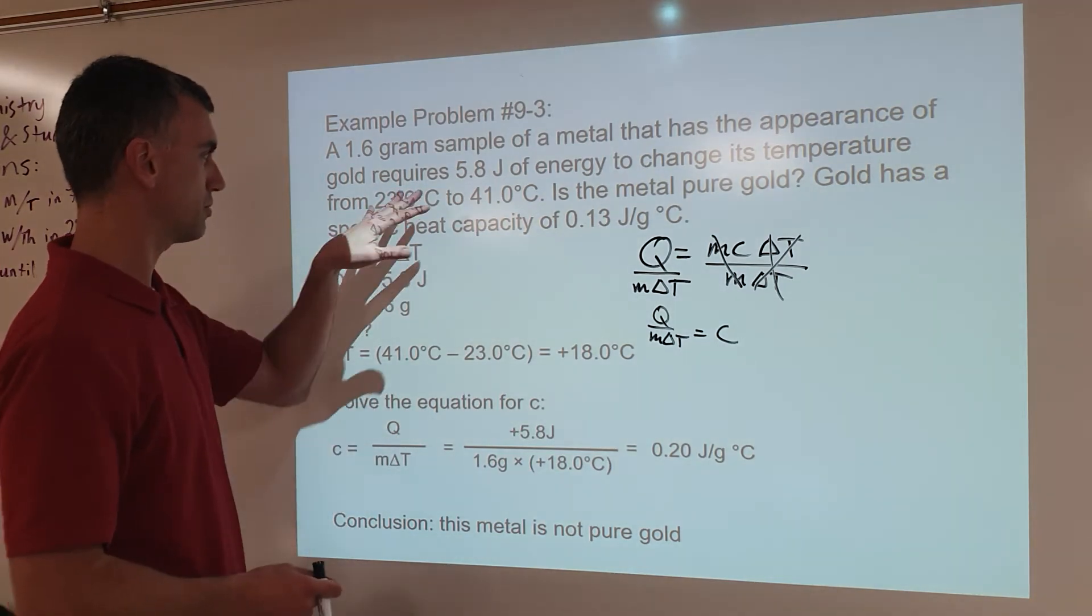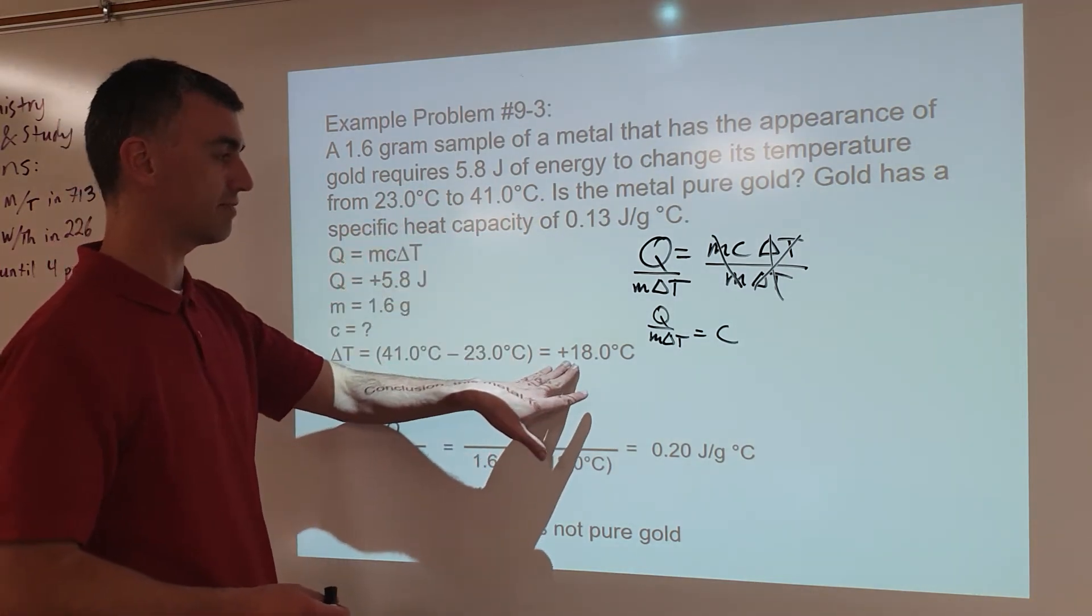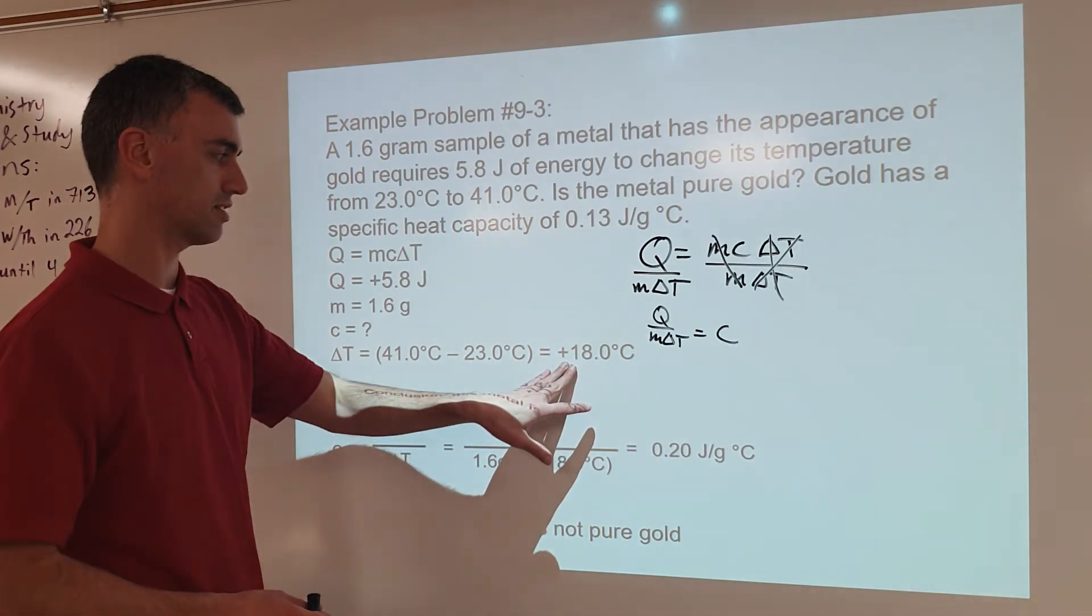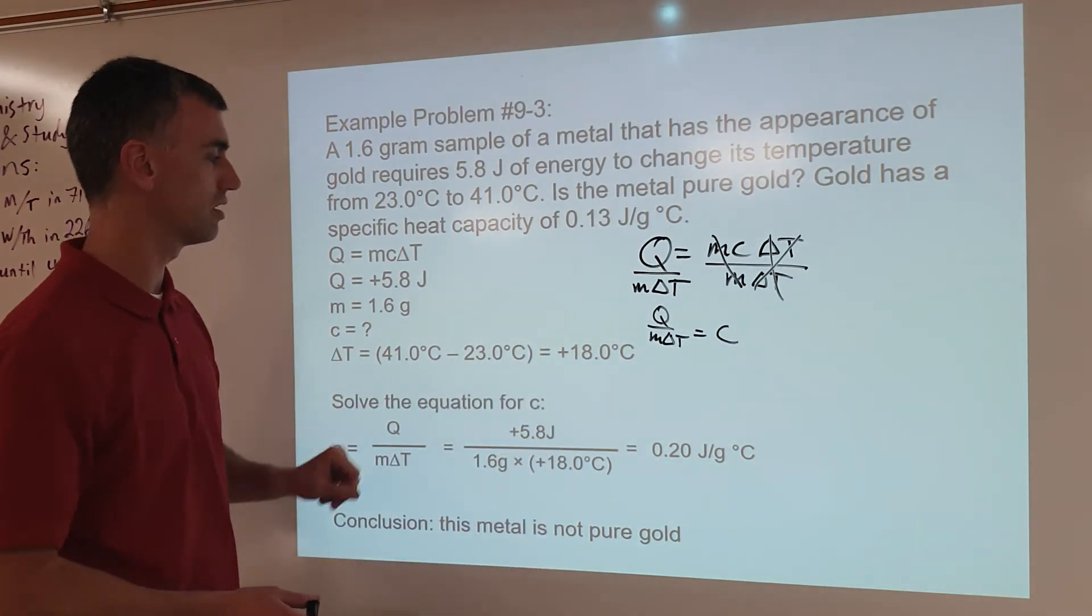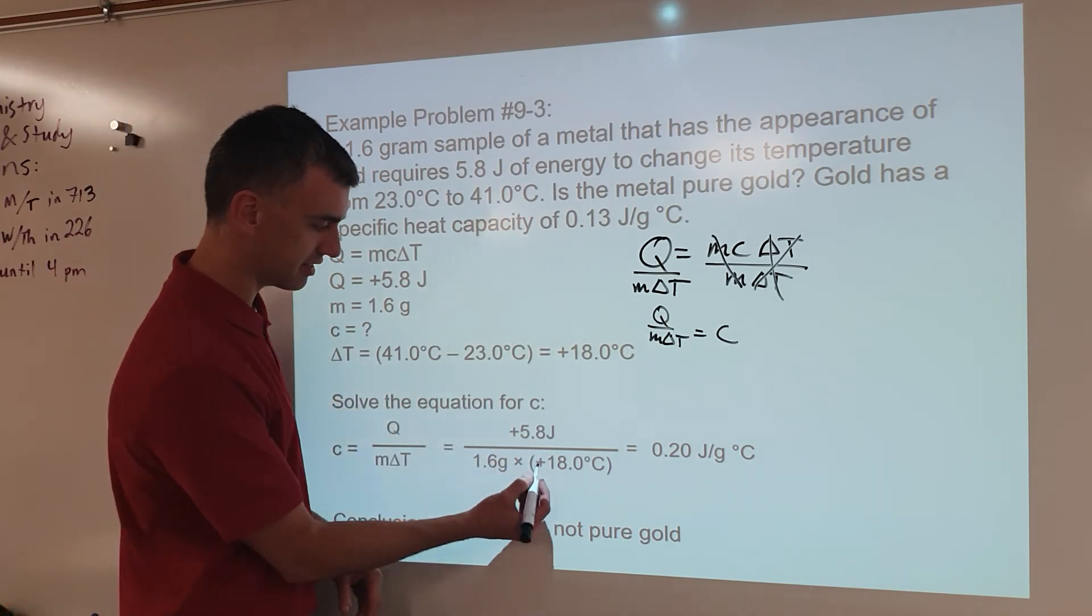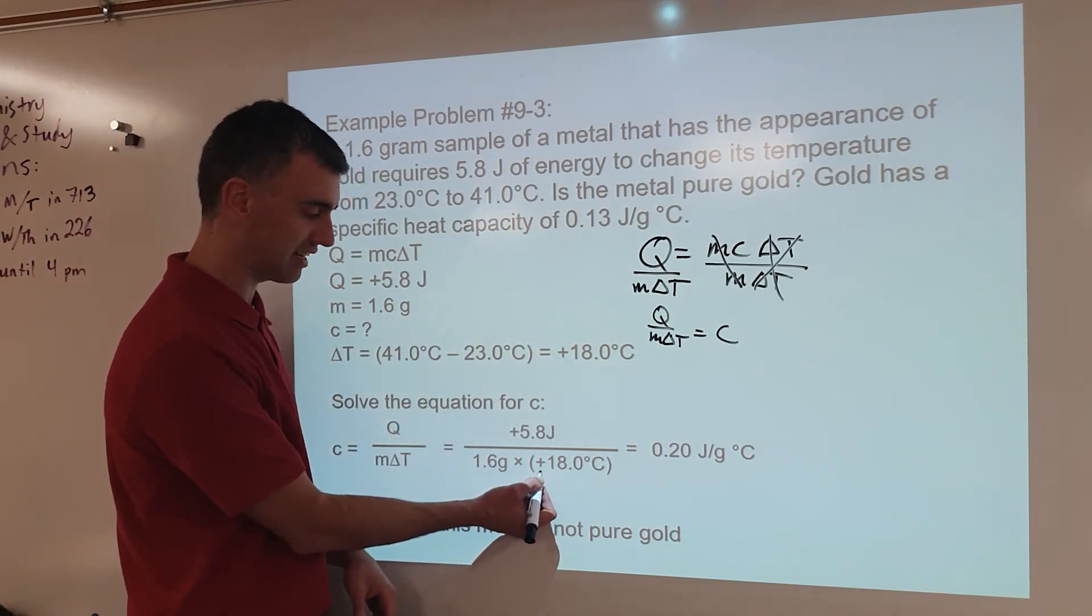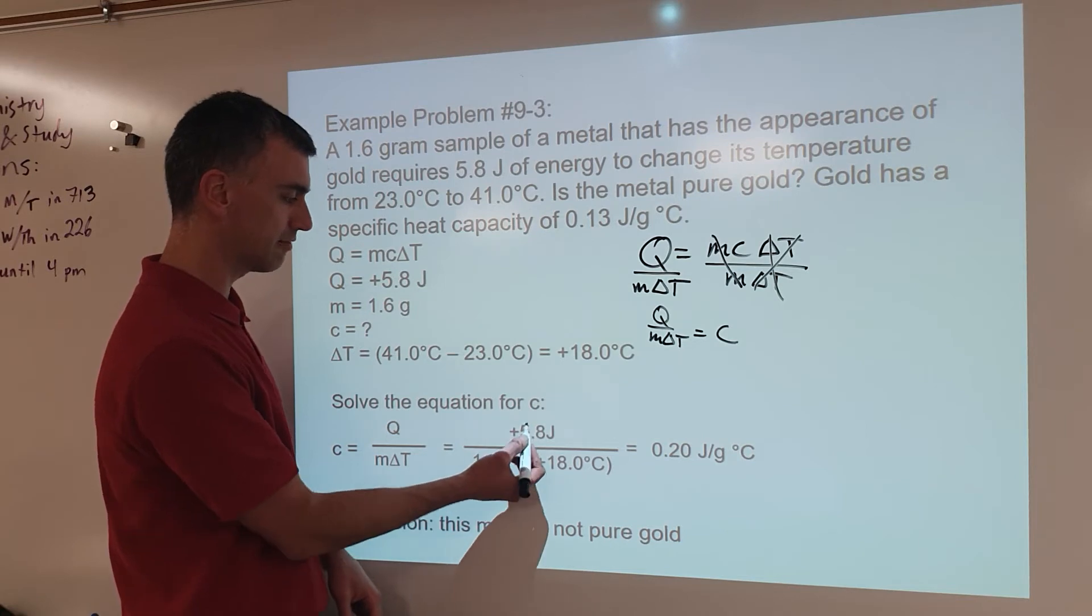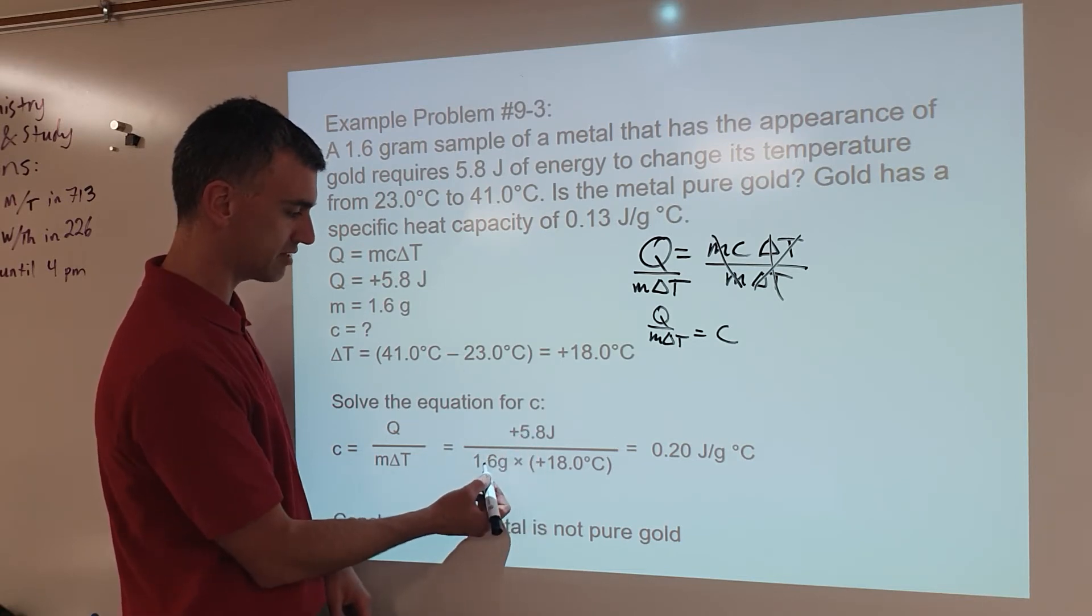So anyway, temperature is going up, so it's positive, not negative, 18 degrees Celsius, or 18.0°C. Now once you've done that, you can put this number here. And again, this plus is only to emphasize that it's not a negative number. So really what we're just saying is 5.8 divided by 1.6 times 18.